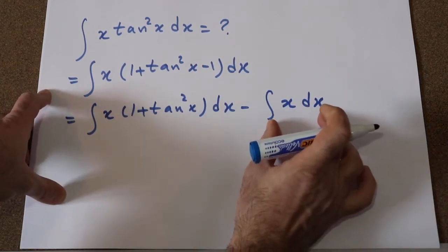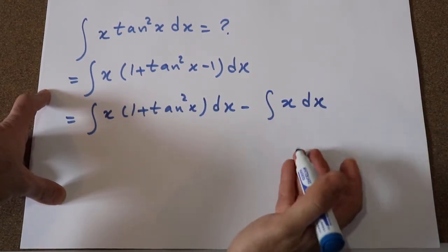So this part is relatively easy. The integral of x dx is equal to x² divided by 2.